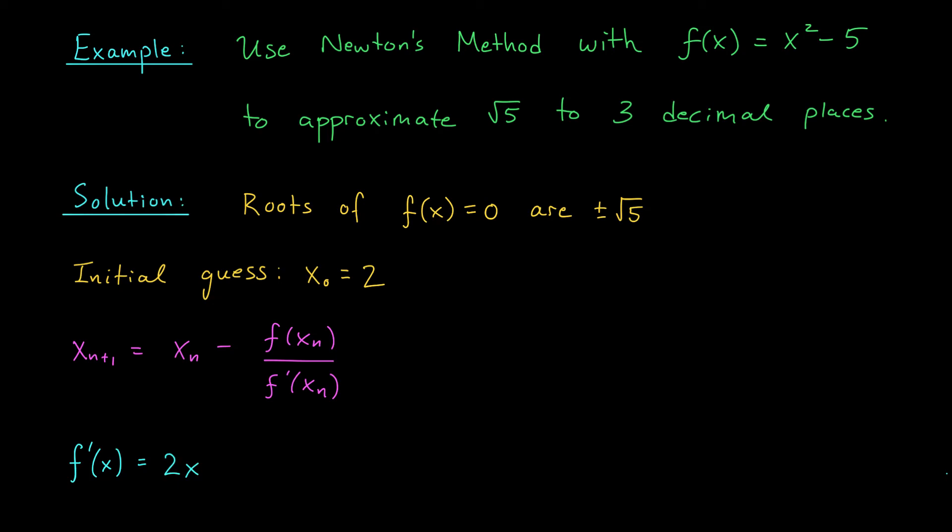Well, at this point, it's just a matter of plugging the numbers in. We continue to generate terms until they stabilize to three decimal places. My first term after the initial guess is x1. x1 is going to be x naught minus f of x naught over f prime of x naught. I'll let you check that you should get 2.25 for the first term.